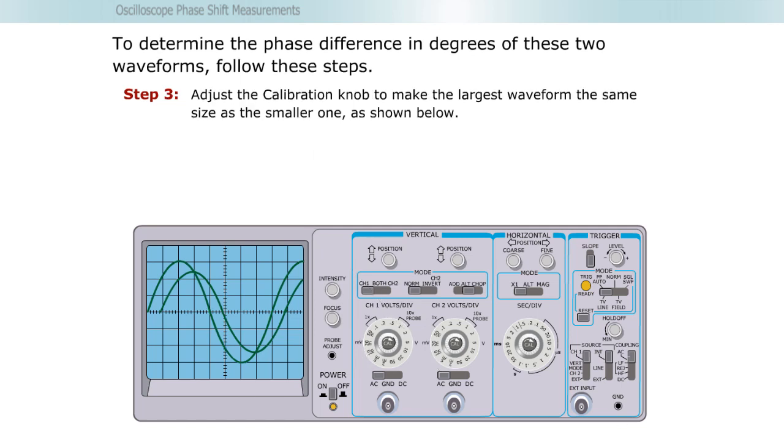Step three, adjust the calibration knob to make the largest waveform the same size as the smaller one.